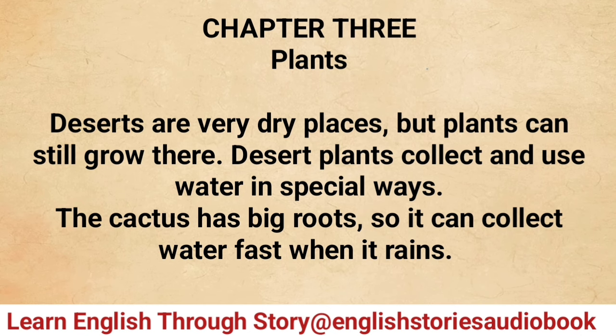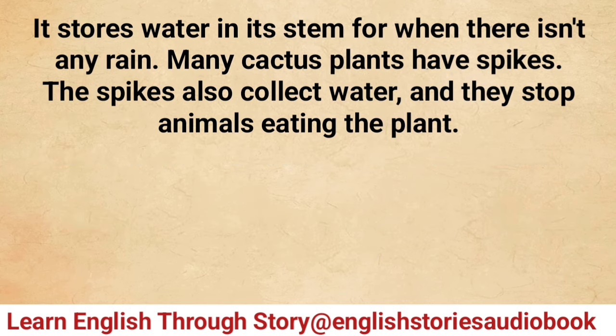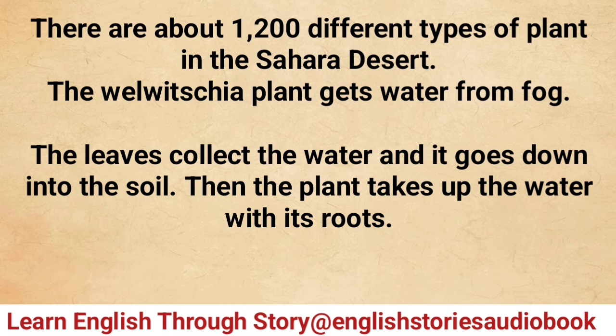The cactus stores water in its stem for when there isn't any rain. Many cactus plants have spikes. The spikes also collect water and they stop animals eating the plant. There are about 1,200 different types of plants in the Sahara Desert.